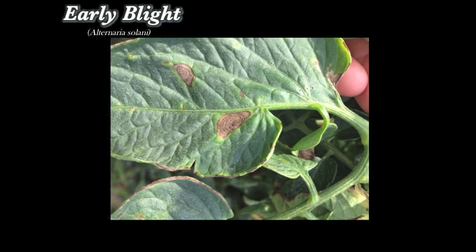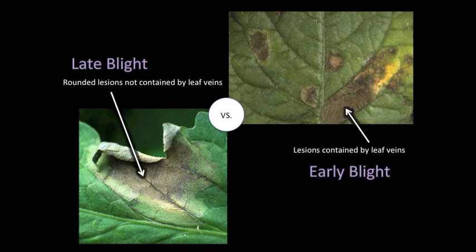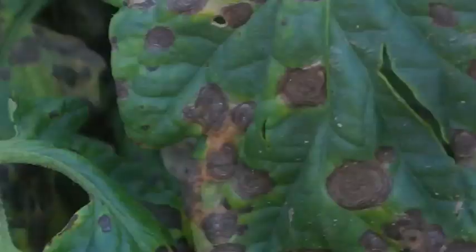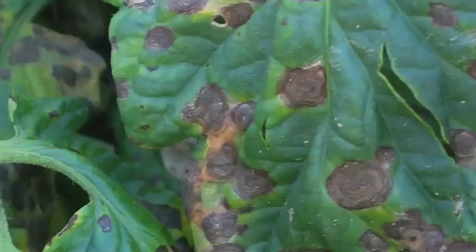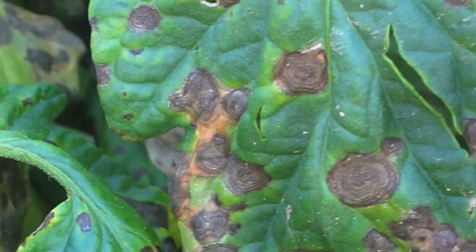Early blight is a common disease on both tomato and potato. On leaves, early blight lesions are often angular in appearance, with edges bounded by leaf veins. Leaf veins don't tend to stop late blight, so late blight lesions have more rounded edges. Early blight lesions often have a target appearance, with dark rings of fungal spores. Early blight can also infect tomato fruit around the stem.